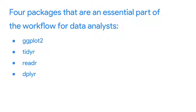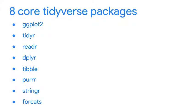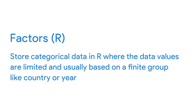So that's the fab four of the Tidyverse. They'll all make your programming in R more straightforward and efficient. The other four packages are definitely useful too, but you might not use them as often. Tibble works with data frames. Purrr works with functions and vectors, helping make your code easier to write and more expressive. stringr includes functions that make it easier to work with strings. forcats provides tools that solve common problems with factors. As a quick reminder, factors store categorical data in R where the data values are limited and usually based on a finite group like country or year.